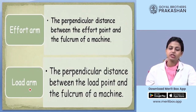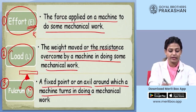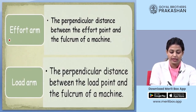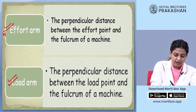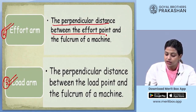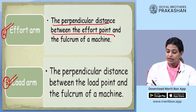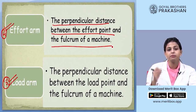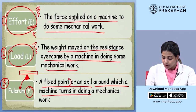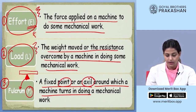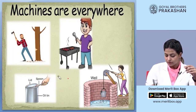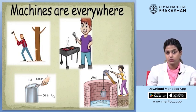There are some more definitions linked with the previous ones. Now we already defined effort and load. Depending on what is effort and what is load, we define effort arm and load arm — definitions number 4 and 5. The effort arm is defined as the perpendicular distance between the effort point, that means where you are putting the effort, and the fulcrum of a machine. Fulcrum is the fixed point or axle around which the force is being applied. Let's take the example of what is effort, what is load and what is fulcrum.